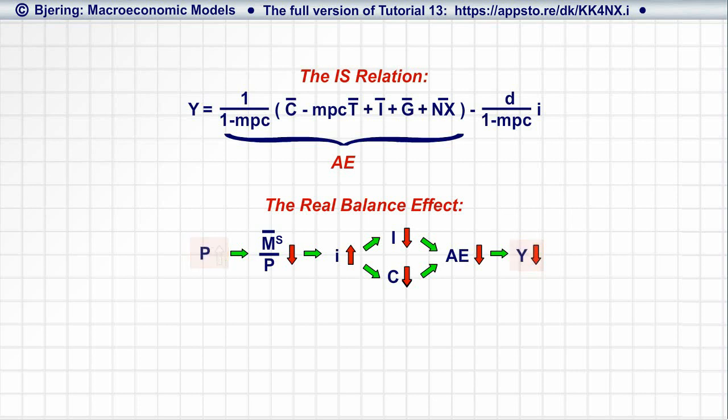It appears that there is now another source of change in the interest rate and in the change in equilibrium output and income it generates. In addition to exogenous changes in either the money supply, M bar, or in the interest rate, I bar...